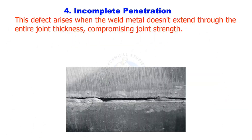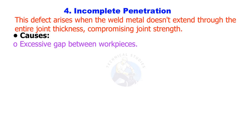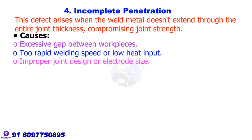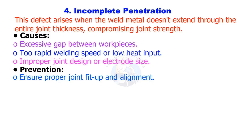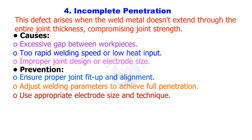Incomplete penetration arises when the weld metal does not extend through the entire joint thickness, compromising joint strength. Causes include excessive gap between workpieces, too rapid welding speed or low heat input, and improper joint design or electrode size. Prevention: ensure proper joint fit-up and alignment, adjust welding parameters to achieve full penetration, and use appropriate electrode size and technique.